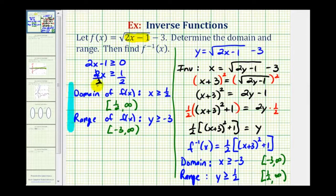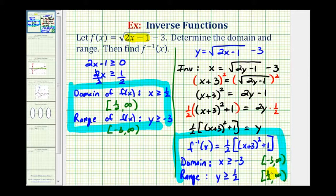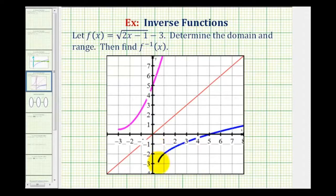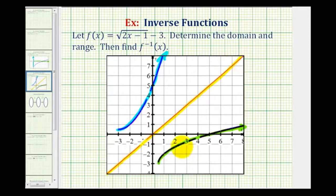Here's the domain of the original function, the inverse function, and the domain and range of the inverse function. To verify graphically: if we graph the function and its inverse on the same coordinate plane, the two functions should be symmetrical across the line y equals x. Here's the graph of the original square root function, the quadratic function with the restricted domain, and the line y equals x. Notice how the two functions are symmetrical across y equals x, which verifies they are inverses of one another and confirms our work is correct.